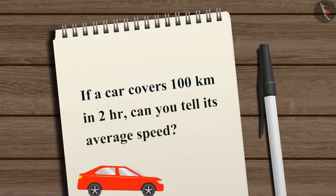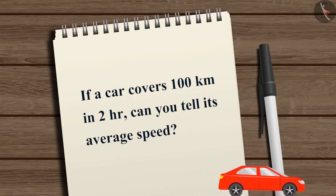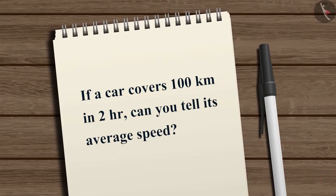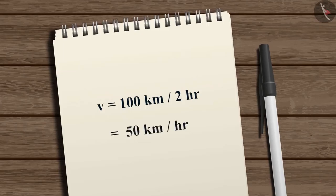Let's take an example. If a car covers 100 kilometers in two hours, can you tell its average speed? v equals 100 kilometers per two hours, which equals 50 kilometers per hour.